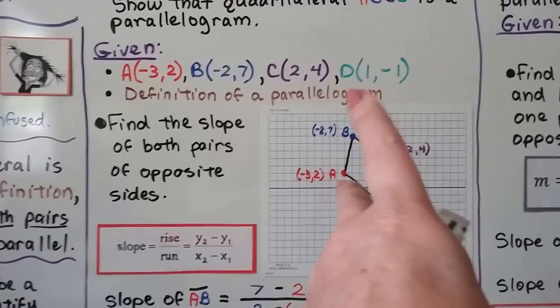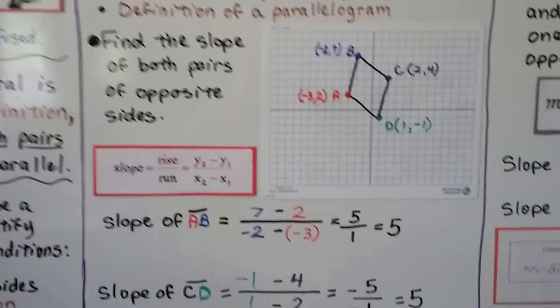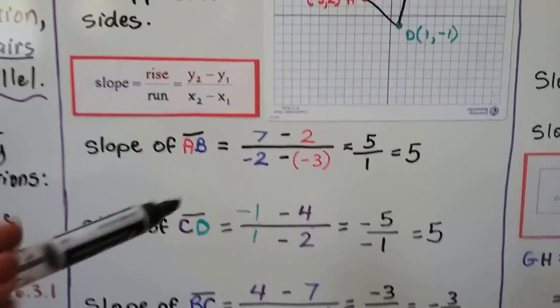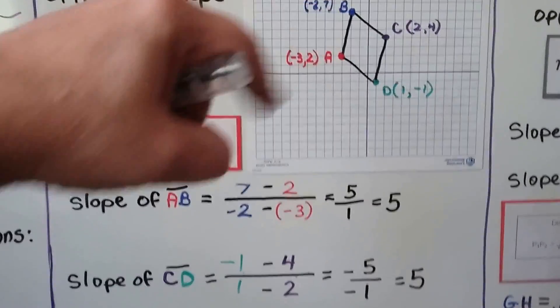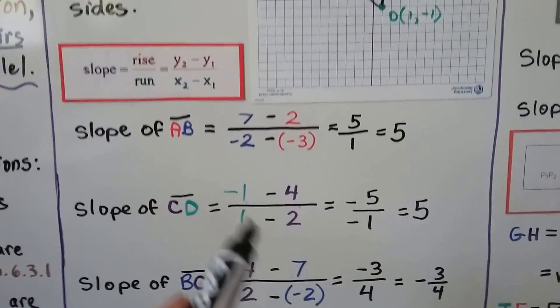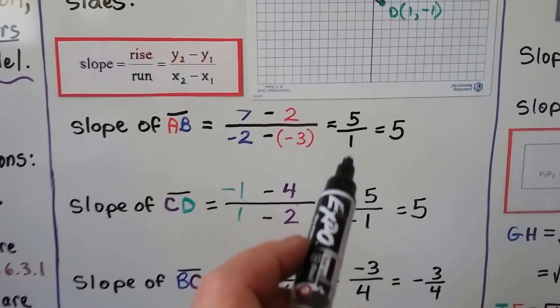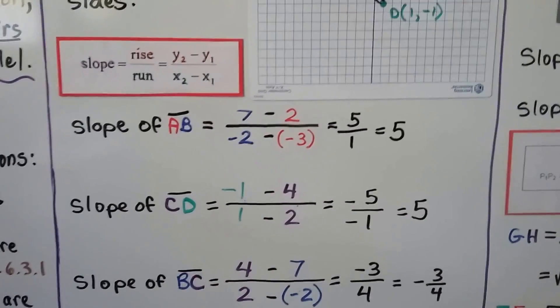And then we'll find the slope of both pairs of opposite sides. We'll find this slope and we'll find that slope and compare them. So we use a slope formula, find the rise and the run. For AB, that's this one, we get 7 minus 2 over negative 2 minus negative 3, which gives us 5 over 1, which gives us a slope of 5.